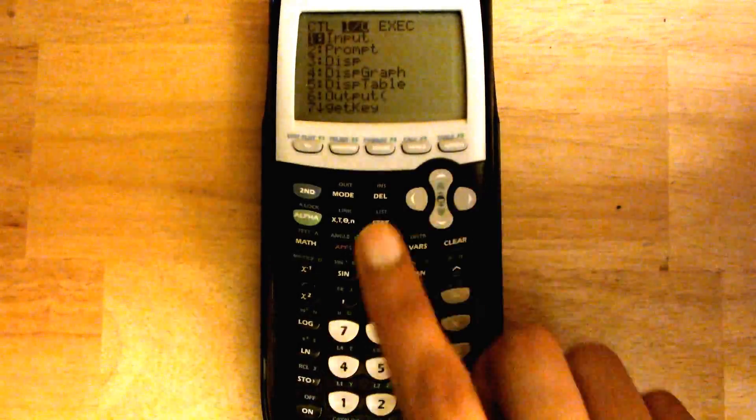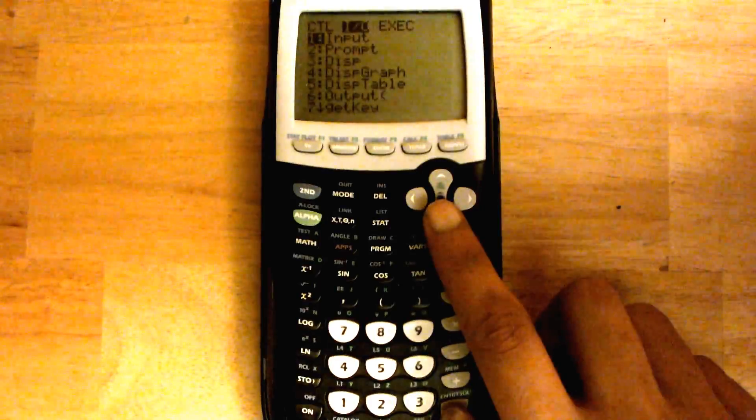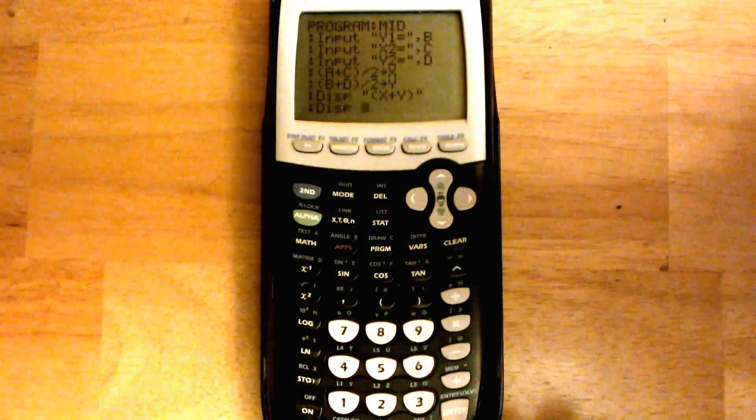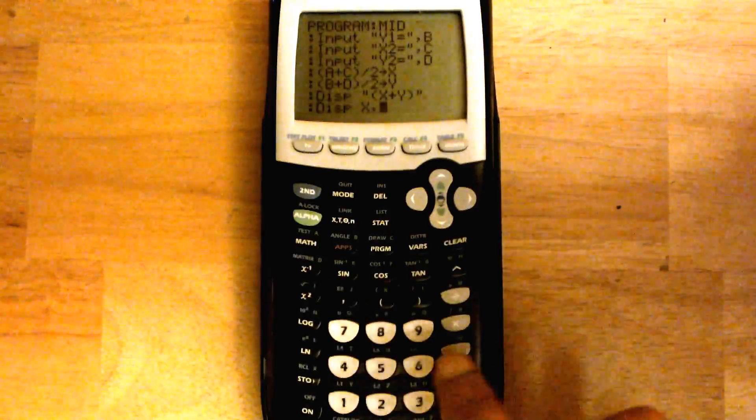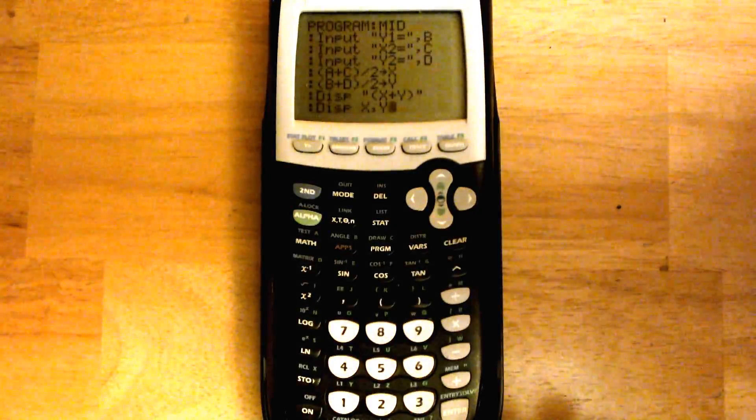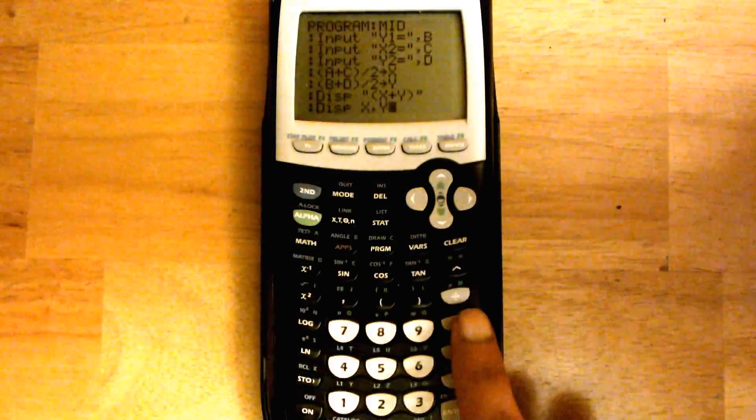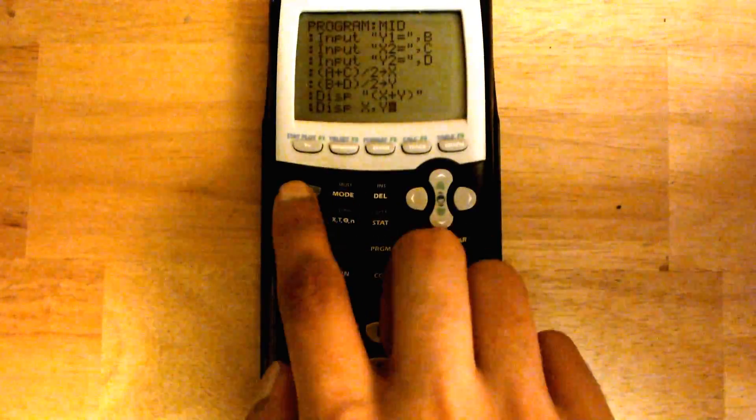And then last line is enter again. Hit program, slide all the way over to i slash o. Go to display, enter. And then we're going to do x, comma, alpha 1, y. And that's it. And then you can just hit second quit.